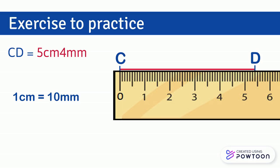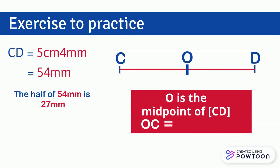So the half of 54 millimeters is 27 millimeters. At the end, we place the point O on the middle of segment CD. OC equals OD equals 27 millimeters. We can now code it by drawing a small dash on OC and the same code on OD.